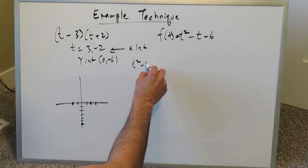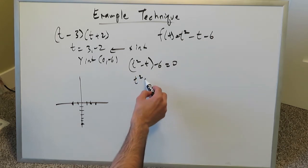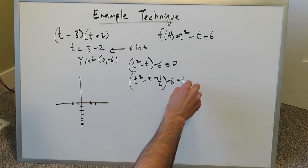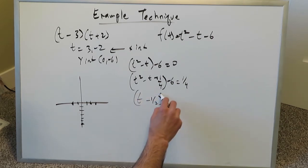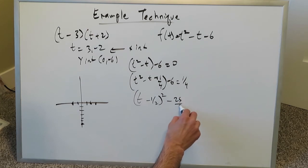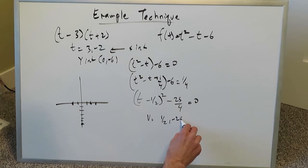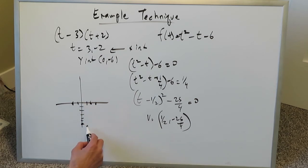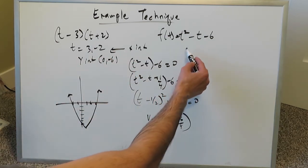To find the vertex, complete the square. Starting with t squared minus t minus 6 equals zero: complete the square to get t minus one-half squared minus 25 over 4 equals zero. The vertex is at one-half comma negative 25 over 4, which is approximately 0.5 comma negative 6.25. Plot this vertex and connect the dots to sketch the parabola.